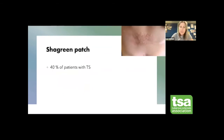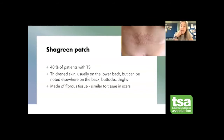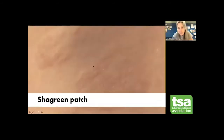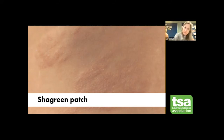The shagreen patch affects about 40% of patients with TS. They are made of thickened fibrous tissue, usually present on the lower back — we find them on the flank area, but they can also be on the back, buttocks, or thighs. They're similar to the hard tissue found in scars. They usually don't cause many problems because they're hidden, and we rarely need to treat them.